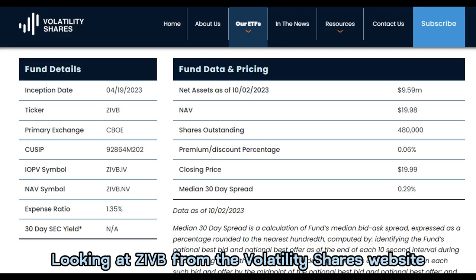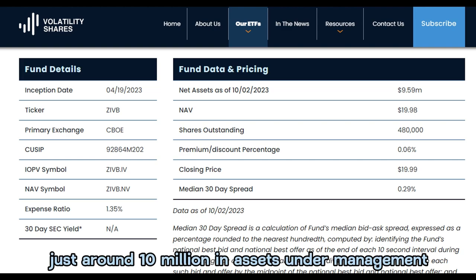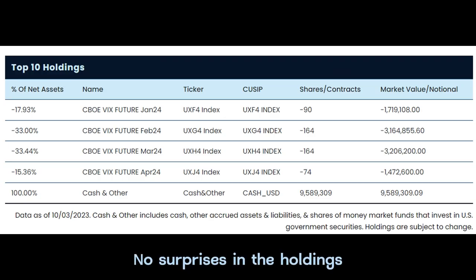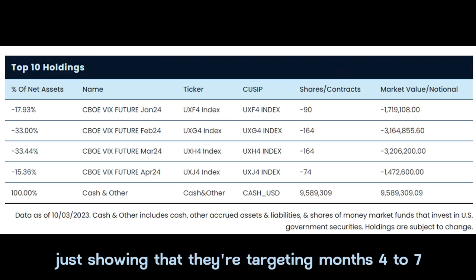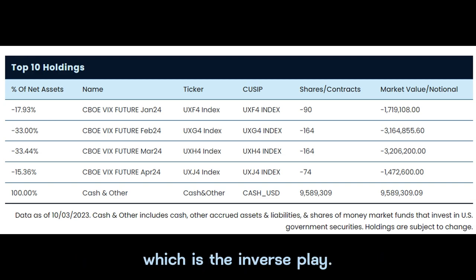Looking at ZIVB from the Volatility Shares website: it just launched in April 2023. It has a pretty hefty expense ratio of 1.35%, and the fund is pretty new and small — just around 10 million in assets under management as of this recording. No surprises in the holdings, just showing they're targeting months four to seven. The negatives in the holdings indicate selling to open, which is the inverse play.